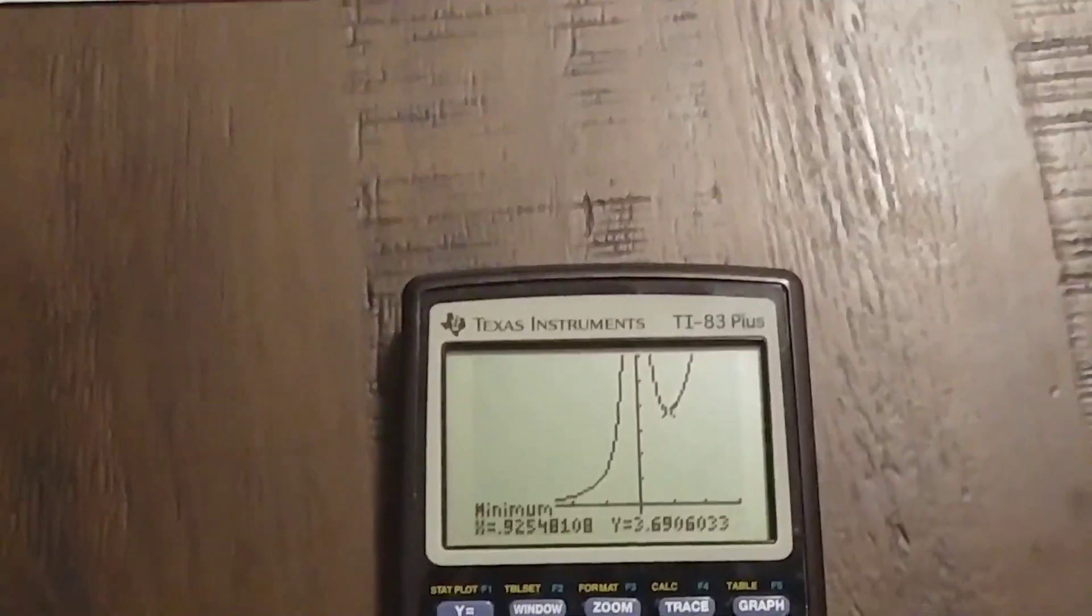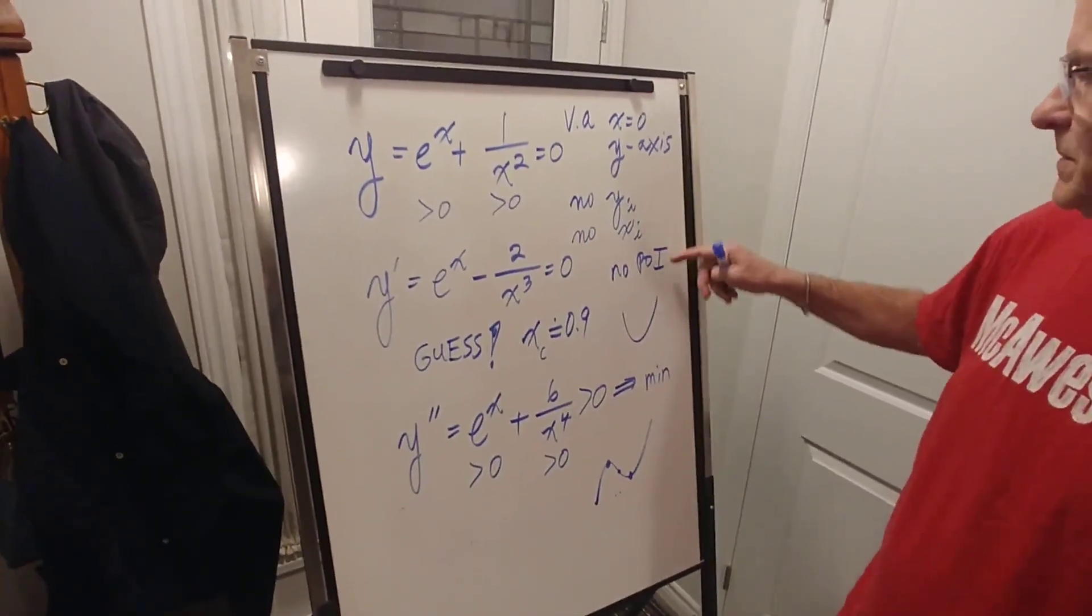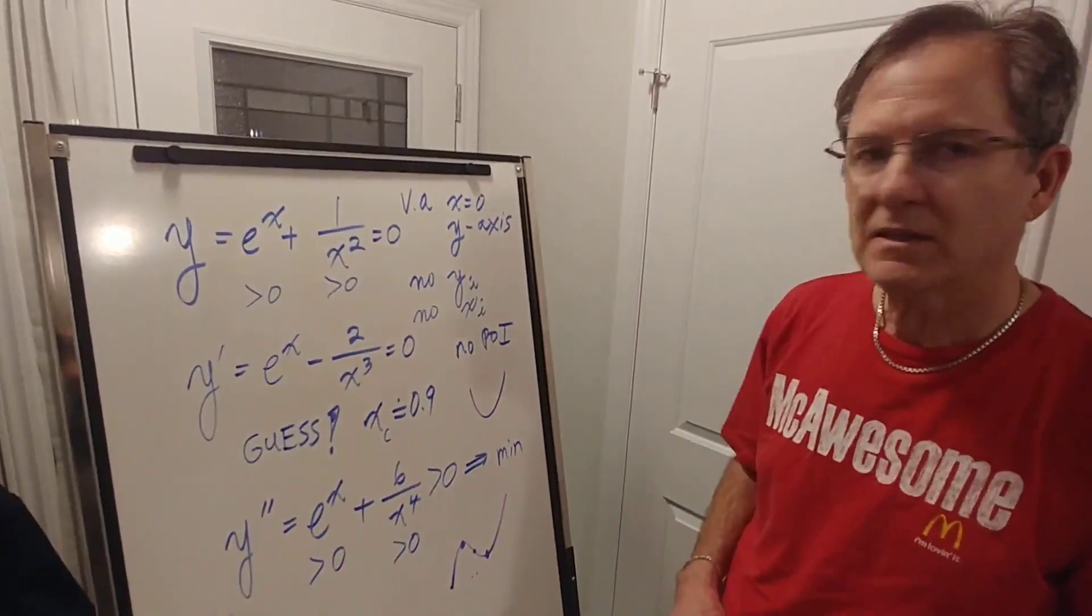So that's pretty much exactly what this all says. Vertical asymptote, no intercepts, no point of inflection. There's a minimum, x is 0.9, exactly as we predicted.